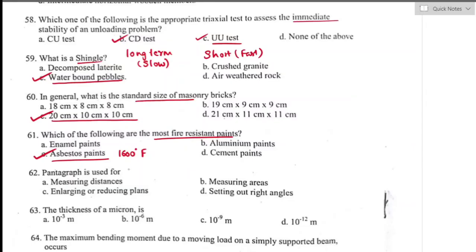Question number sixty-two: a pantograph is used for — pantograph is an instrument used for reproducing maps either to enlarge or reduce them. It works on the principle of a parallelogram. Option C is the right answer — pantograph is used for enlarging or reducing a plan.